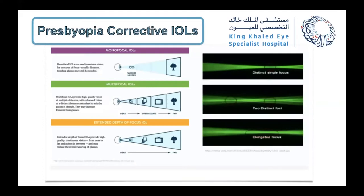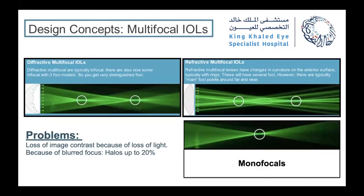Focusing on two lens types — multifocals and extended depth of focus (EDOF) IOLs: trifocals provide two or more focal points, focusing light into multiple foci, while EDOF provides a range of focus — an elongated focal point — allowing the patient to see near and intermediate vision. Multifocals come in two flavors: diffractive and refractive multifocal.